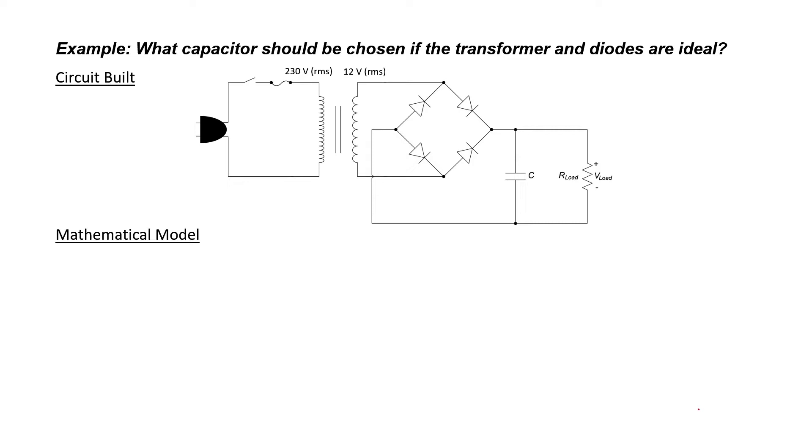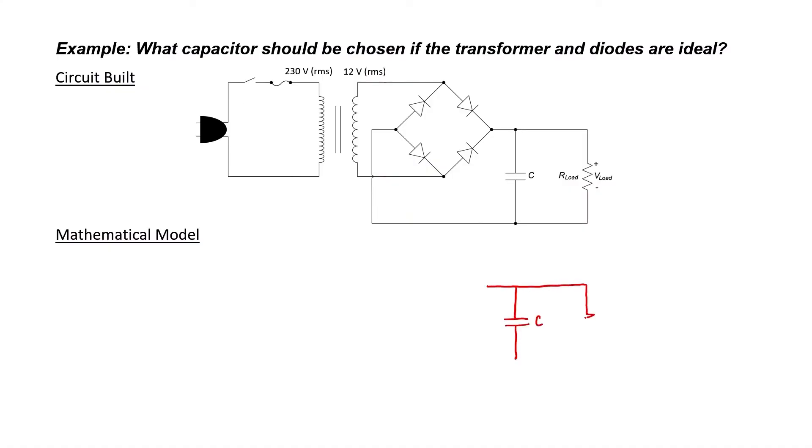First of all, let's assume that the transformer and the diodes are ideal. What effect would the capacitor have on the ripple at the output? In a sense, our capacitor and resistor represent the load.